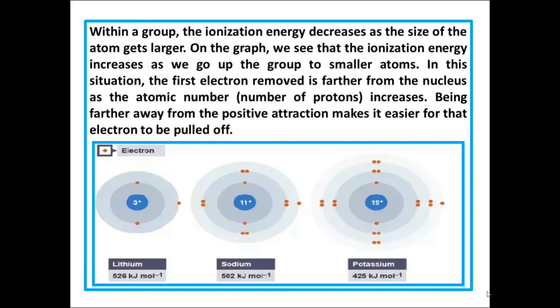So we can say within a group, the ionization energy decreases as the size of the atom gets larger. On the graph, we see that the ionization energy increases as we go up the group to smaller atoms. In this situation, the first electron removes farther from the nucleus as the atomic number (number of protons) increases. Being farther away from the positive attraction makes it easier for that electron to be pulled off.